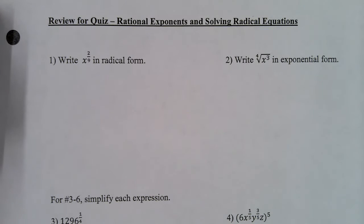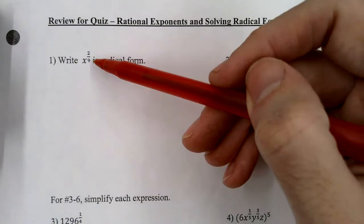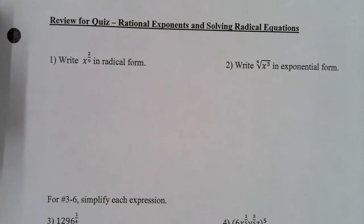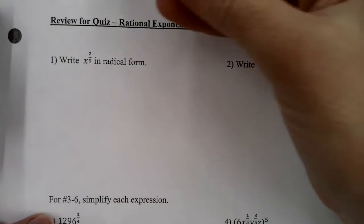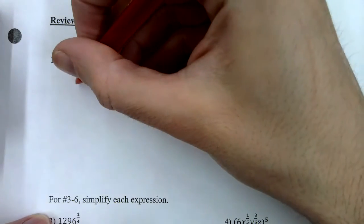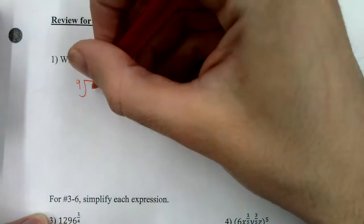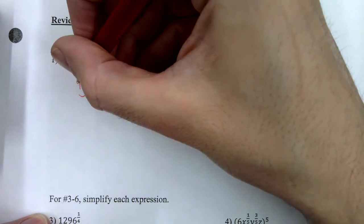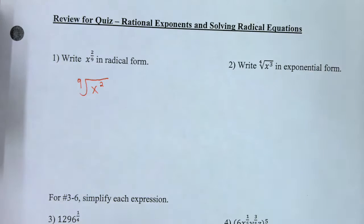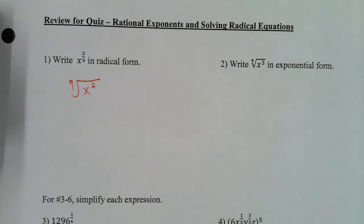Number one says write x to the two-ninths power in radical form. All you need to know is that the denominator becomes your index. So the denominator is nine, that's going to be my index. And what's under the radical will be x squared. That's the answer for that one.